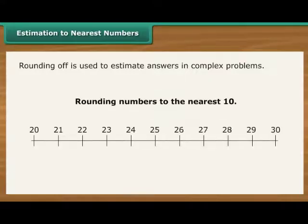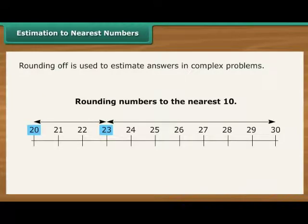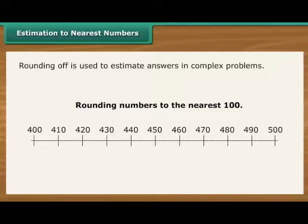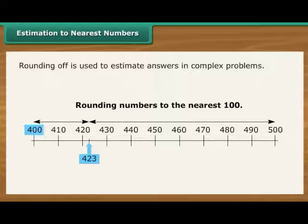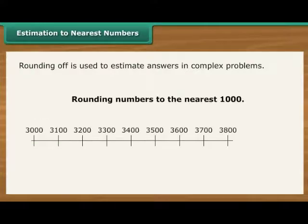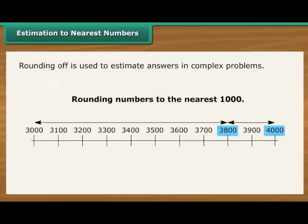Rounding numbers to the nearest ten means finding which ten they are nearest to. For example, 23 rounded to the nearest ten is 20. Rounding numbers to the nearest hundred means finding which hundred they are nearest to. For example, 423 rounded to the nearest hundred is 400. Rounding numbers to the nearest thousand means finding which thousand they are nearest to. For example, 3,800 rounded to the nearest thousand is 4,000.